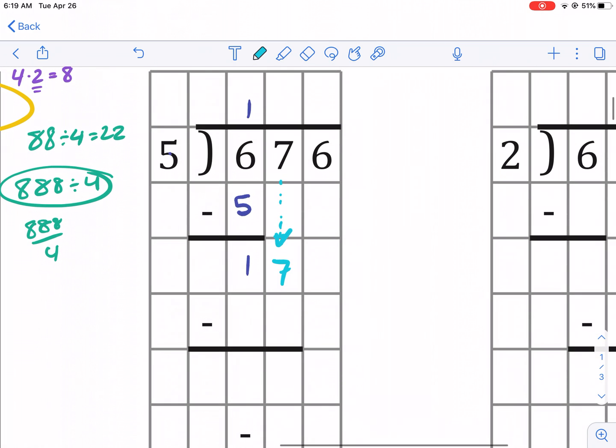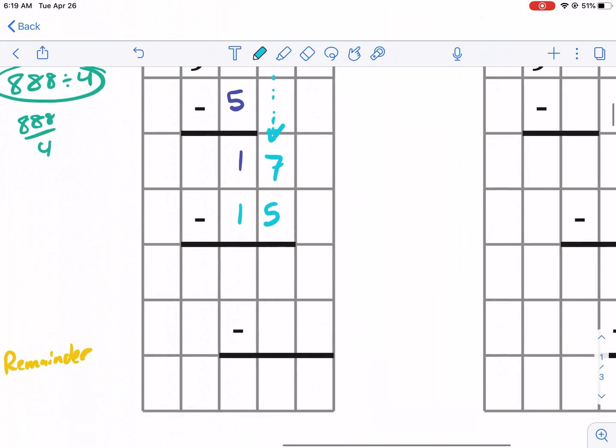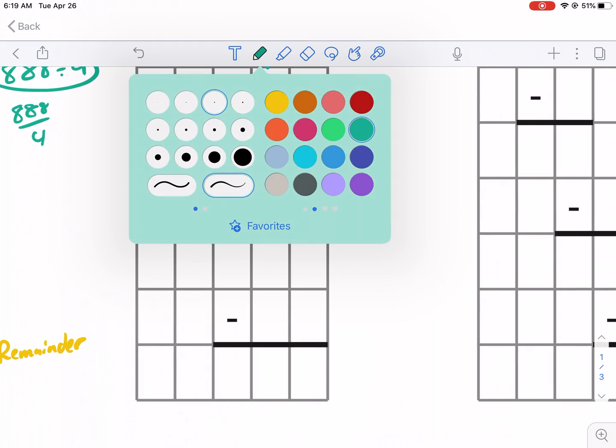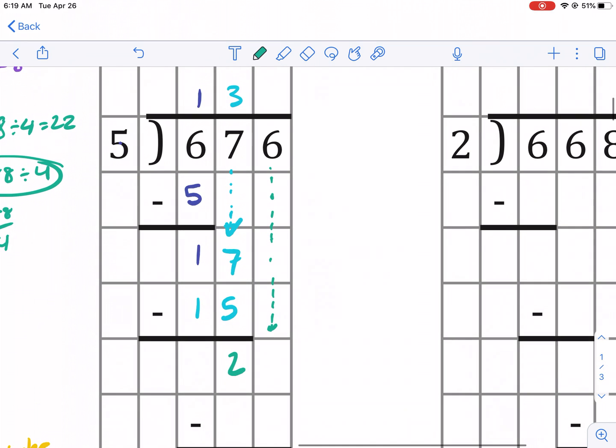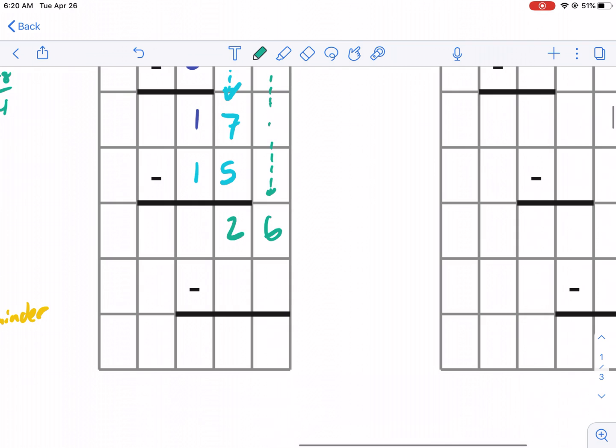And that's 17. Five goes into 17 three times. And that number is 15. Again, I do five times three to get 15. I have a remainder here. That's two. And I have to drop down the next number in line. Sorry about the color change. I didn't mean to do that. But so five goes into 26, how many times? It goes in five times, and that's 25. And I'm going to have a remainder one.